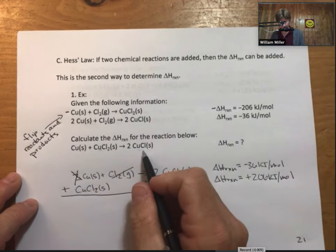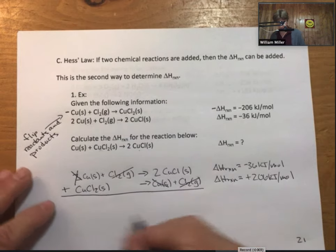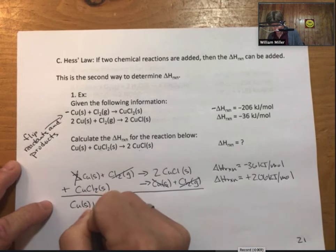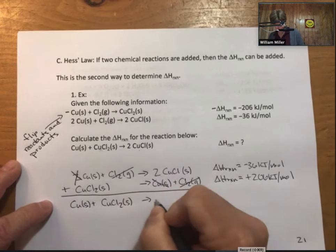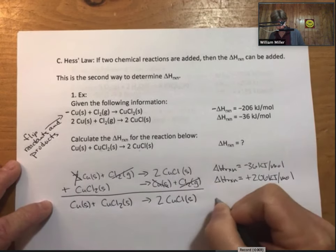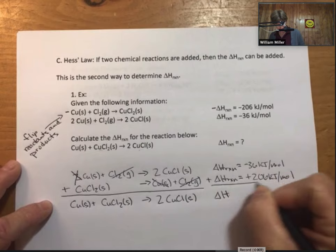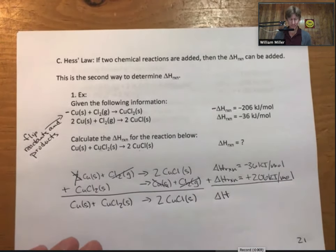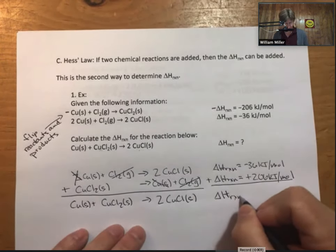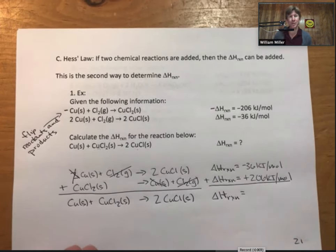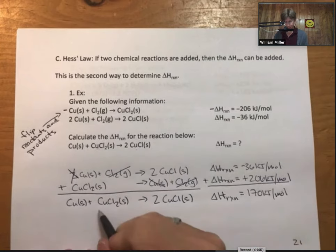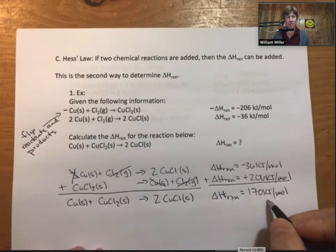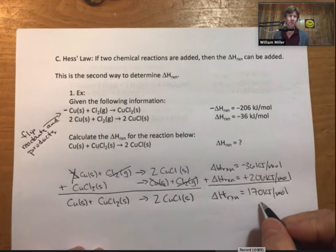I'm going to add up what's left. And lo and behold, I get the reaction that I'm trying to build, which is a harder reaction to do. So add my reactions, add my energies, and I get the delta H reaction for the reaction that I'm looking for. So this bottom reaction is an endothermic reaction. It takes energy in, in order for this reaction to occur.